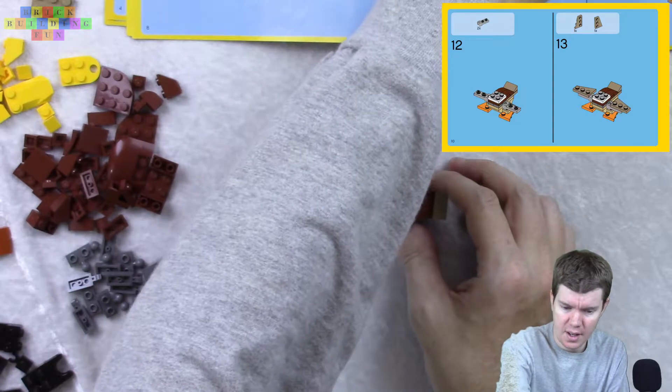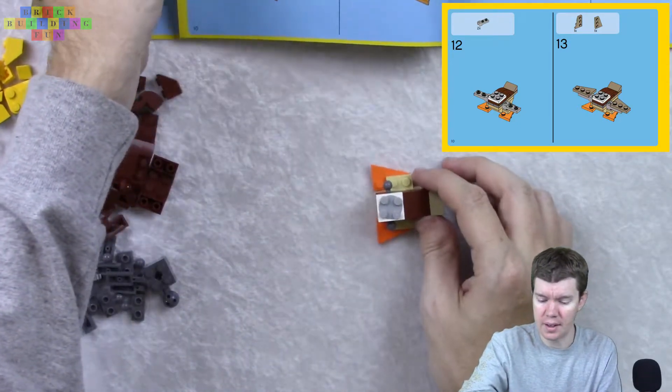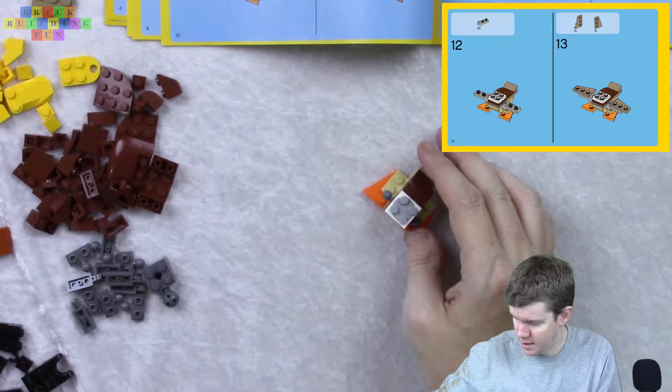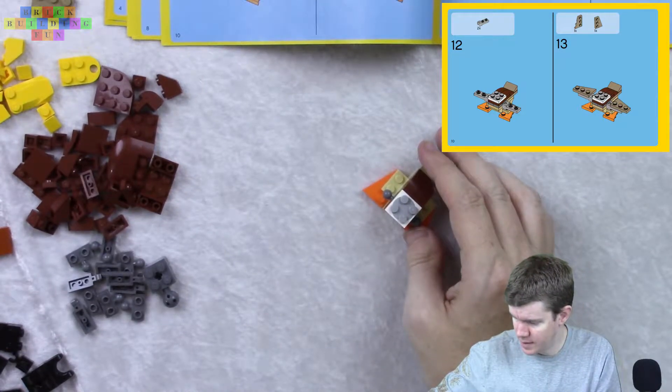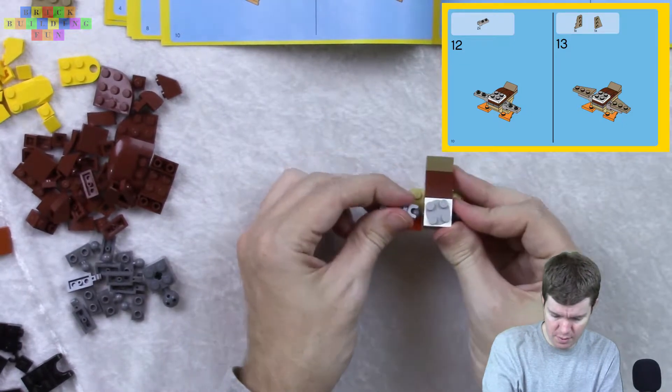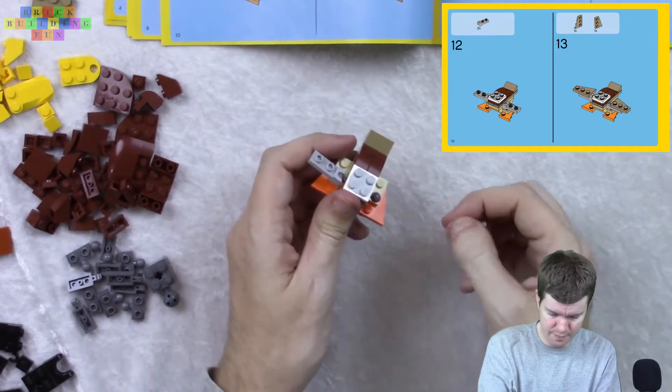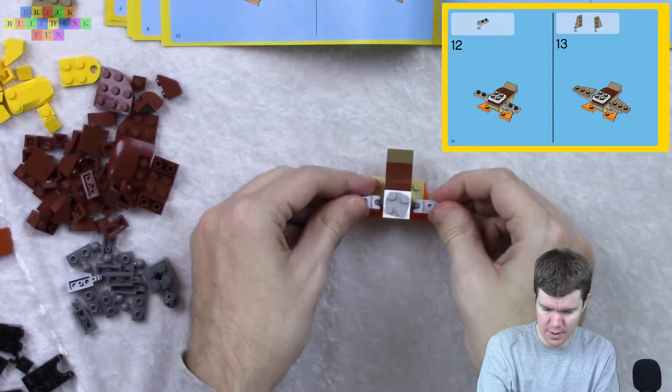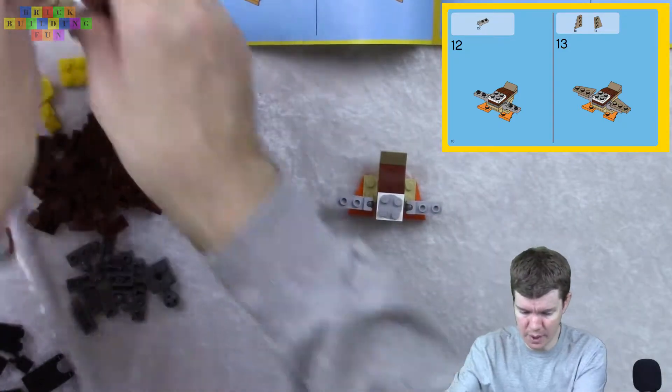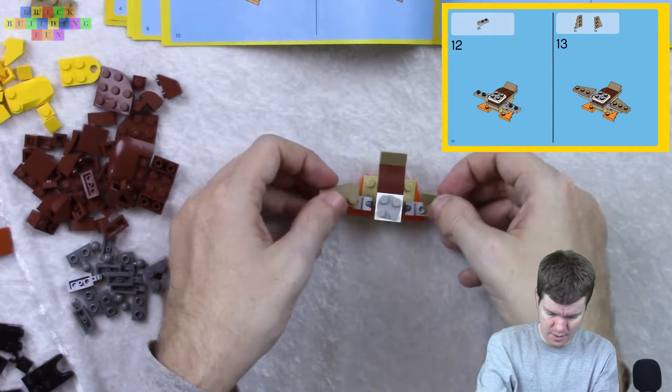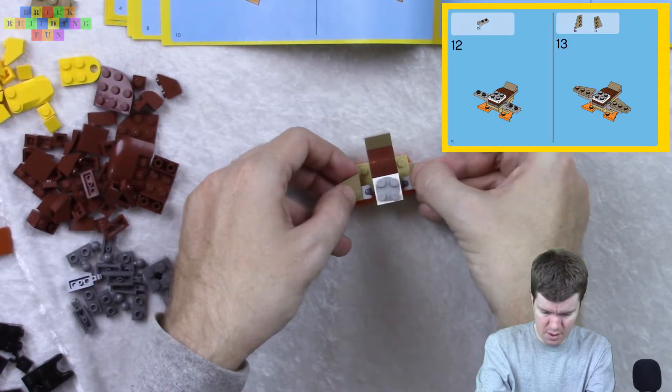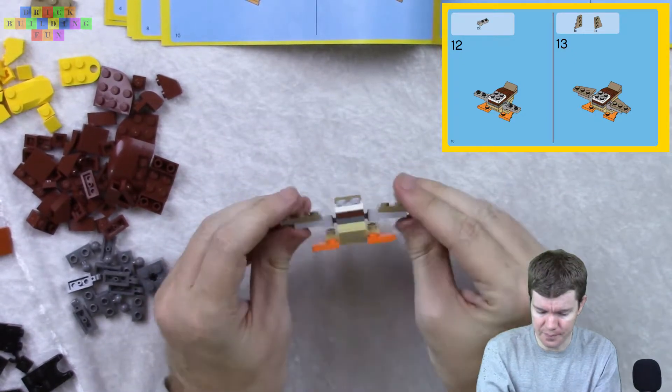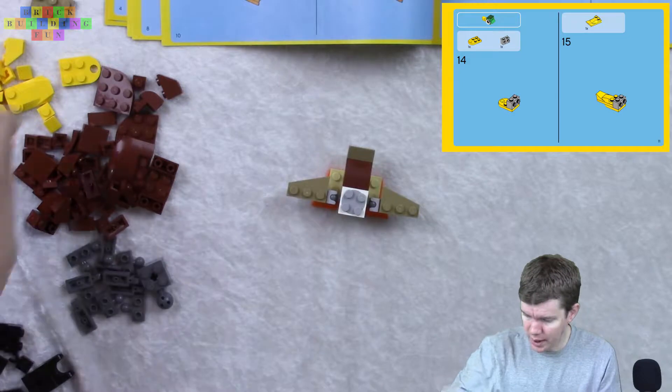The duck is the one with the swiveling head in this set. That's interesting. Let's see. There we go. There. And there. So, obviously, these are going to be the wings. Here and here. Now, we're going to build the head.